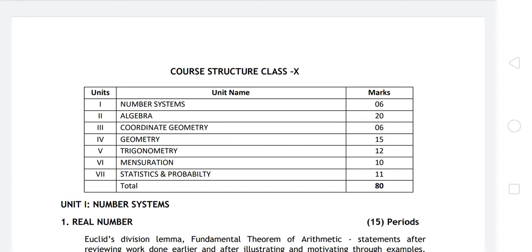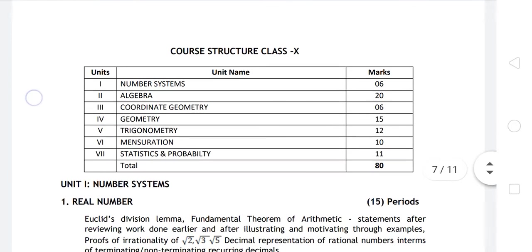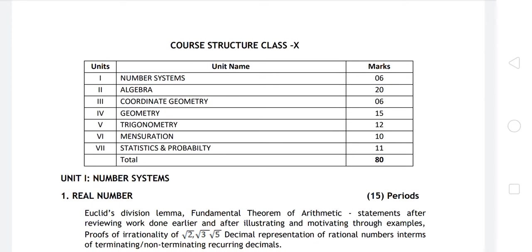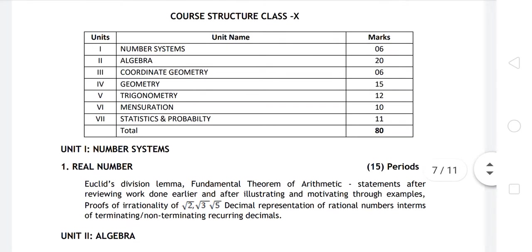Now come to the chapters. Chapter number one is Real Number. Number Systems carries six marks. Next, Algebra carries twenty marks, Coordinate Geometry six marks, Geometry fifteen marks, Trigonometry twelve marks, Mensuration ten marks, then Statistics and Probability carries eleven marks. Total is eighty marks for the paper.